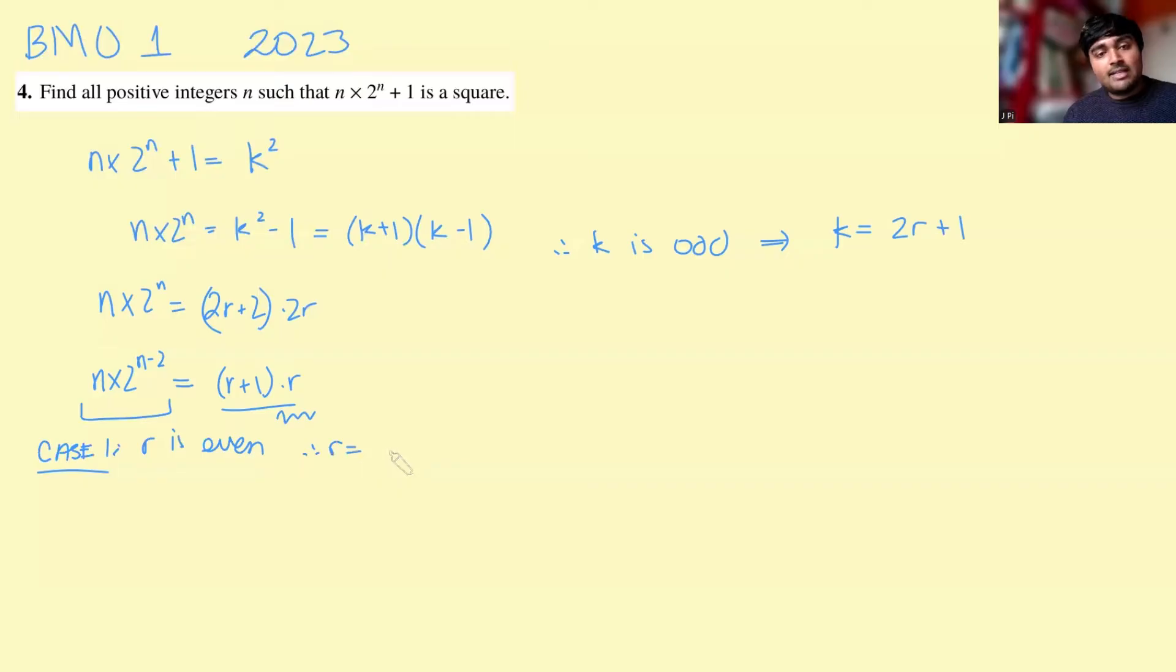So we can say r is, let's use a letter we haven't used, let's use t times 2 to the n minus 2, where t is just, again, some integer. t could be odd or even, we don't know. Turns out it doesn't really matter. But it's t times 2 to the n minus 2. So if we substitute that back into this equation here, we have n times 2 to the n minus 2 equals r plus 1, which is going to be this. So t times 2 to the n minus 2 plus 1 times t times 2 to the n minus 2. We're going to cancel 2 to the n minus 2 on both sides. So we get n equals t times t 2 to the n minus 2 plus 1.